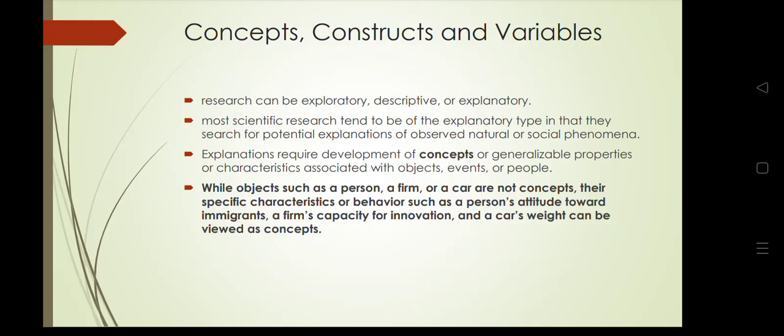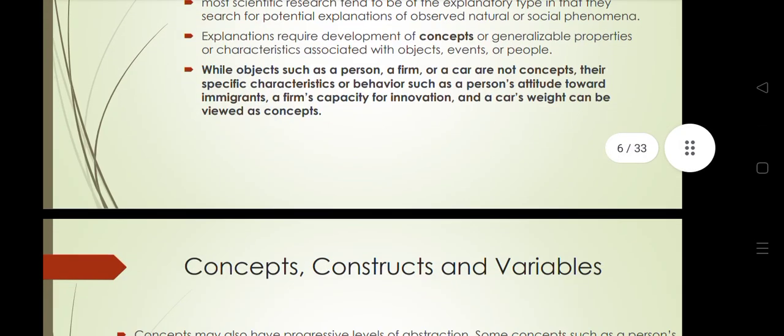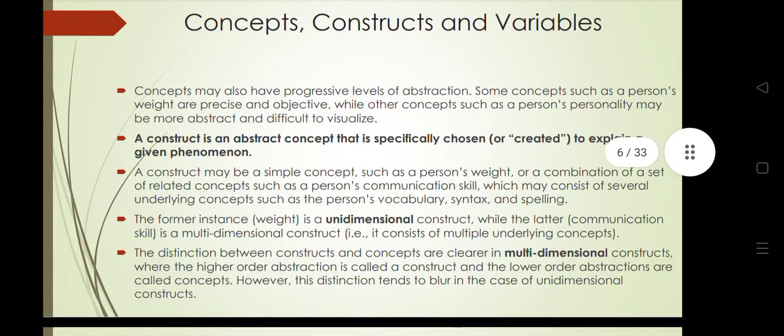The direct method is through direct observation — we can measure someone's height or weight, or record the color of their hair. The indirect method is through questionnaires in which respondents provide answers to questions about their gender, income, age, attitudes, qualities, and behaviors. These are known as concepts.